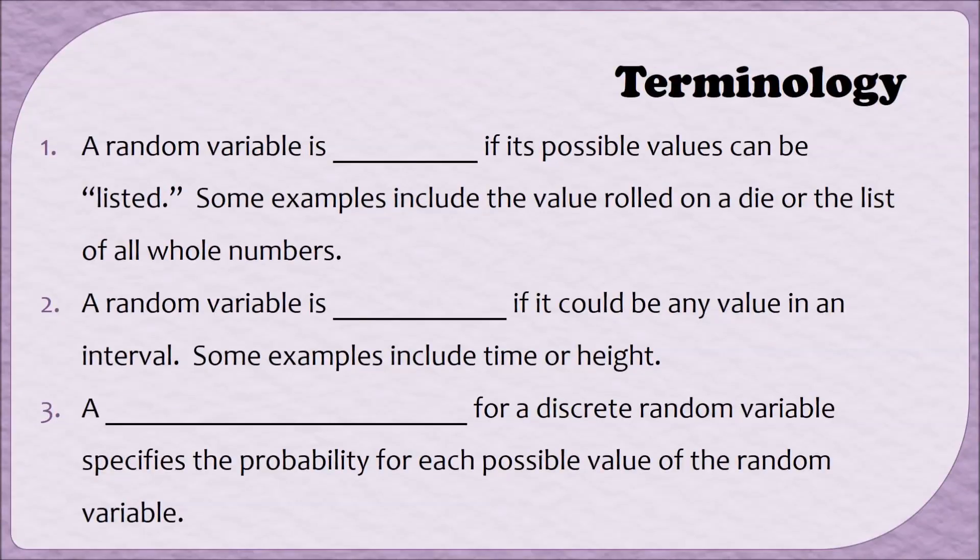Some terminology. First, a random variable is discrete if its possible values can be listed. Some examples include the value that you roll on a die, or the list of all whole numbers, or whatever you get when you flip a coin, whether it's heads or tails.